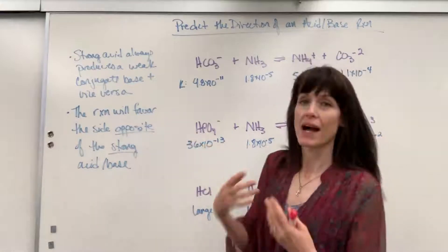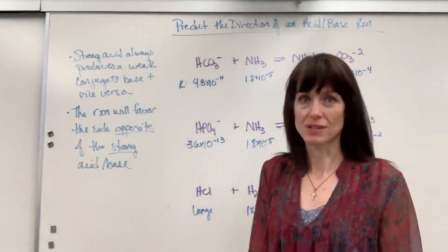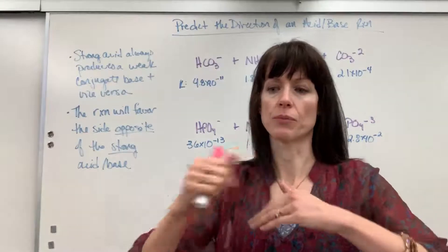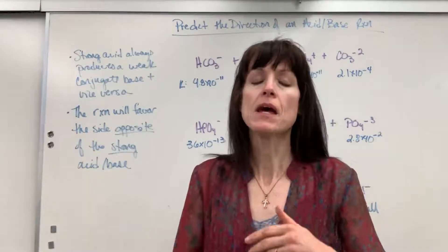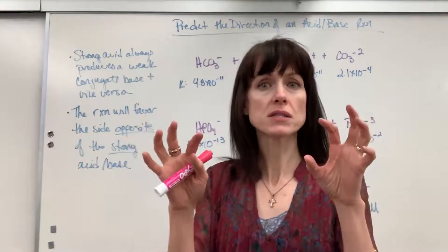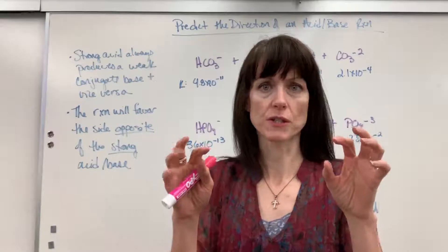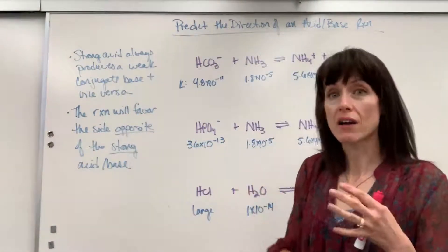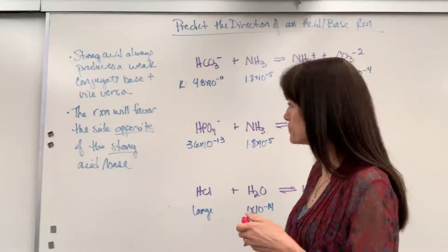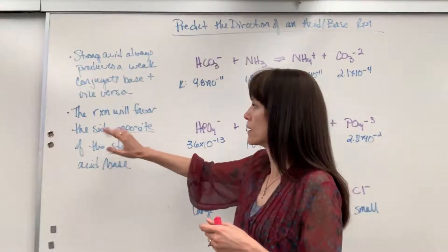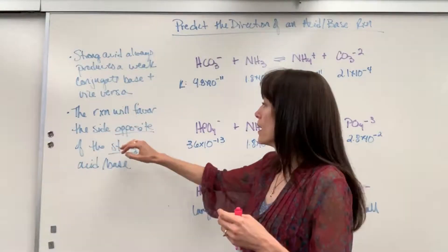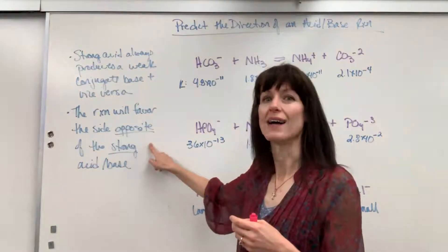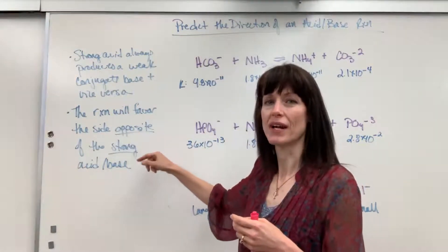The reaction will favor — meaning once it comes into perfect equilibrium, where forward rate equals reverse rate and you compare the constant concentrations — the reaction will favor a higher concentration of the reactants or products on the opposite side of the strong acid or base.